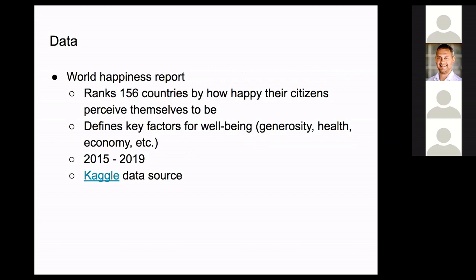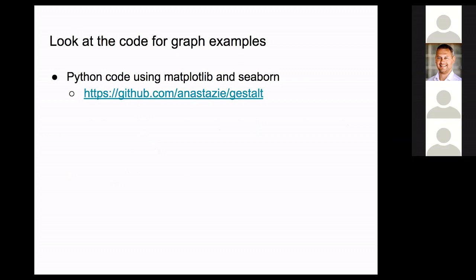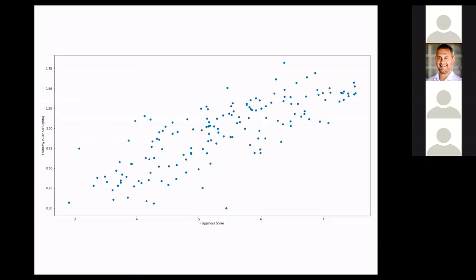Now let's look at some examples. We'll be using data from the World Happiness Report, which has questionnaires for 156 countries asking citizens how happy they perceive themselves to be. It also defines key factors for well-being — how generosity, health, economy, and so on contribute to happiness. I used data from 2015 to 2019, available on Kaggle, and all graphs are on my GitHub.